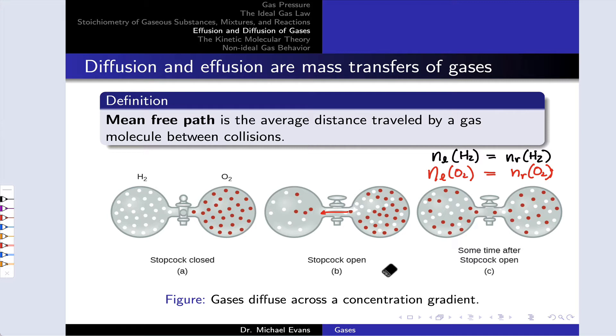They do this because on the submicroscopic level, if we look at what gas molecules are doing, they are moving at rapid speed, mostly through open space, and occasionally colliding with one another.